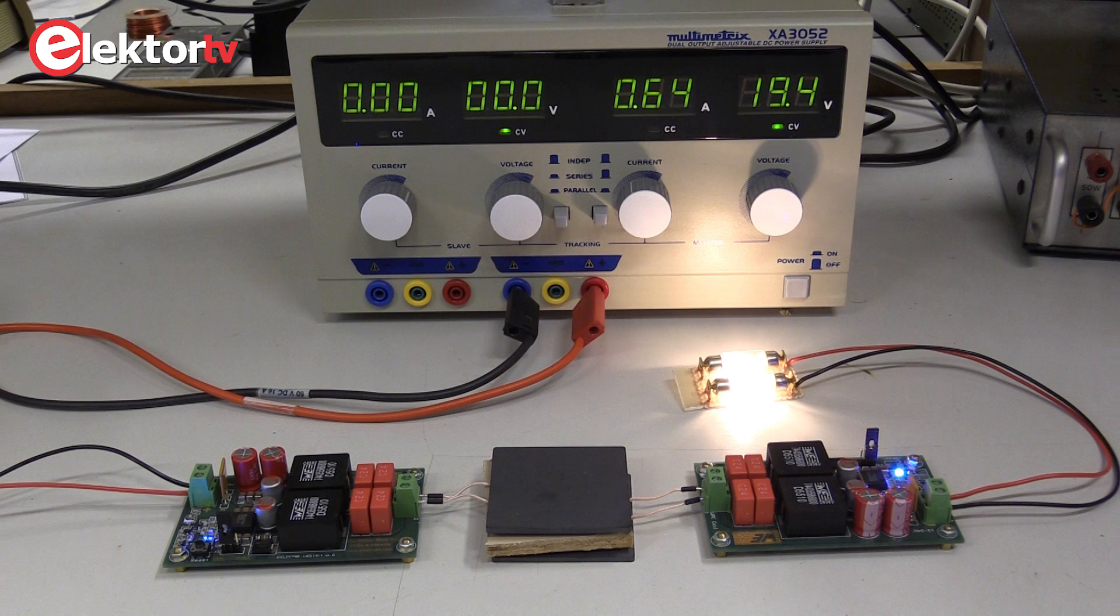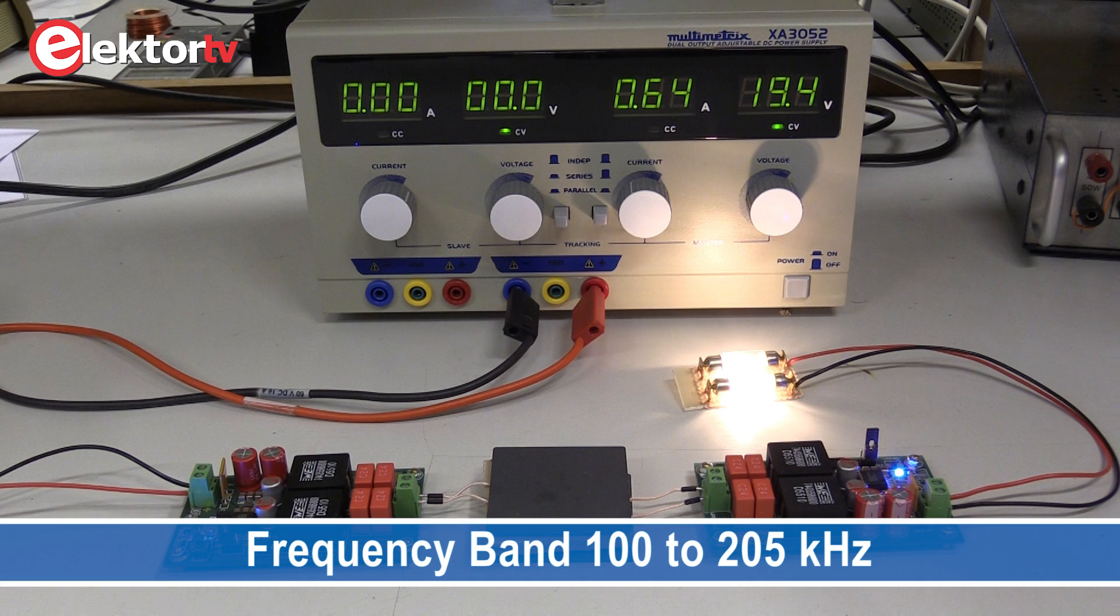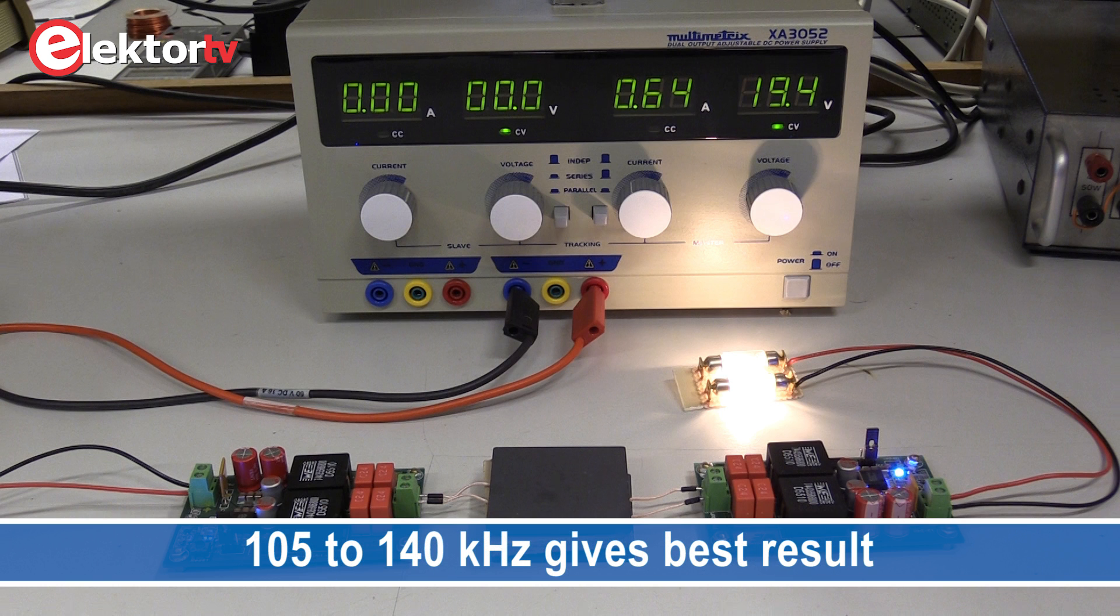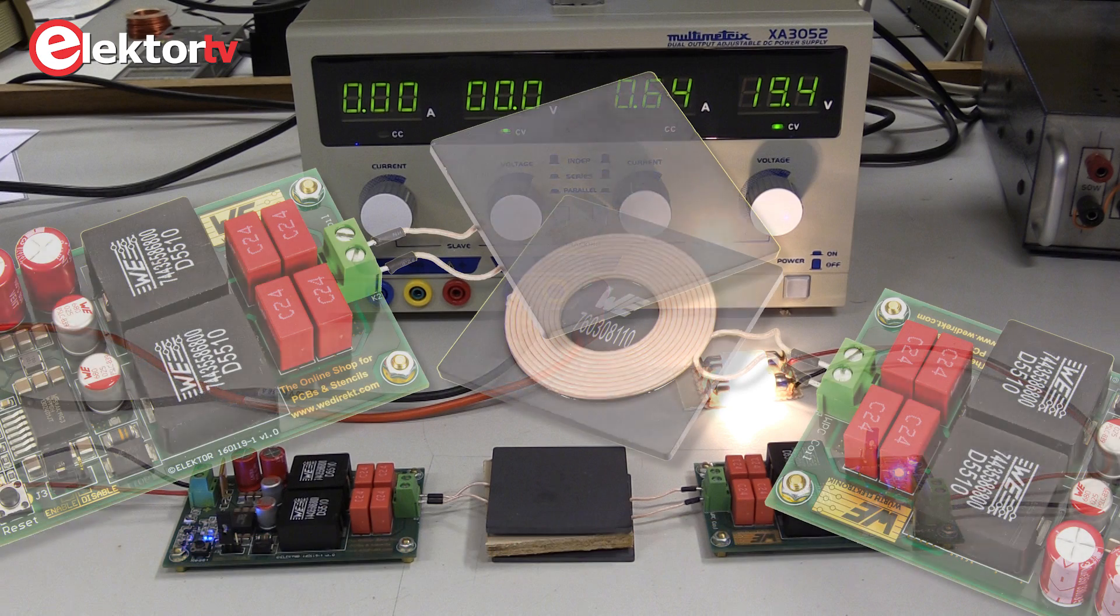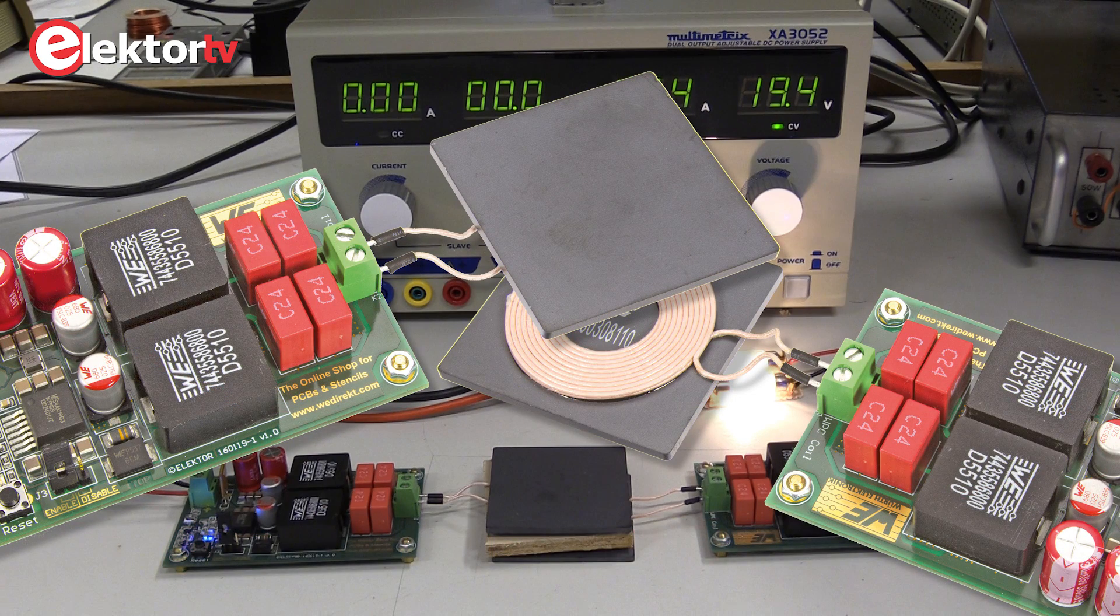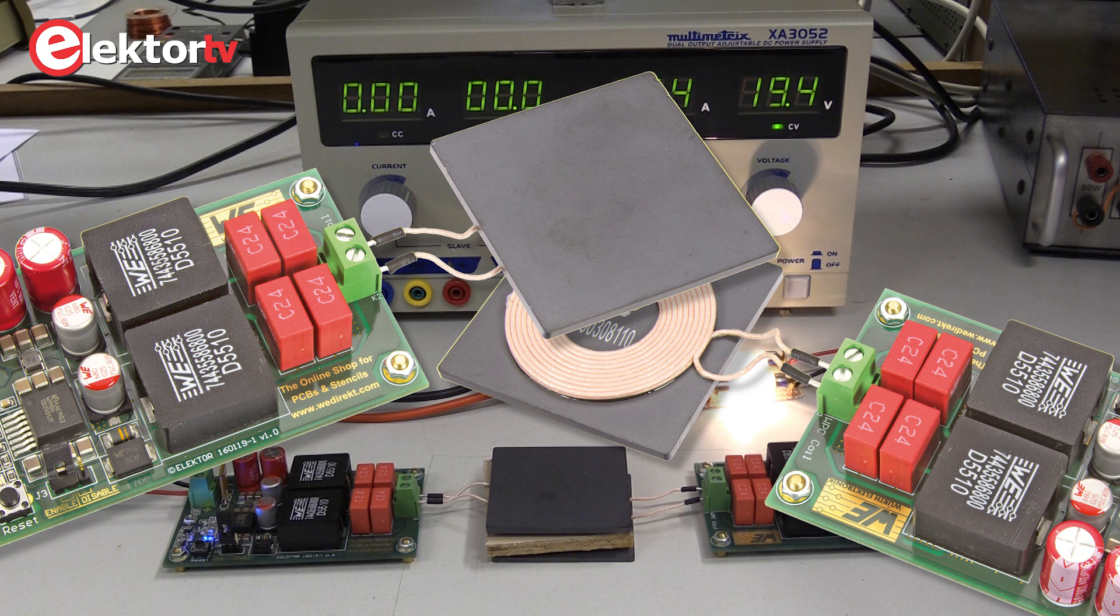The frequency band for inductive power transfer is 100 to 205 kilohertz where 105 to 130 kilohertz give the best results. Above 150 kilohertz losses in the parallel capacitors become too high. Our circuit operates at a frequency of approximately 100 kilohertz.